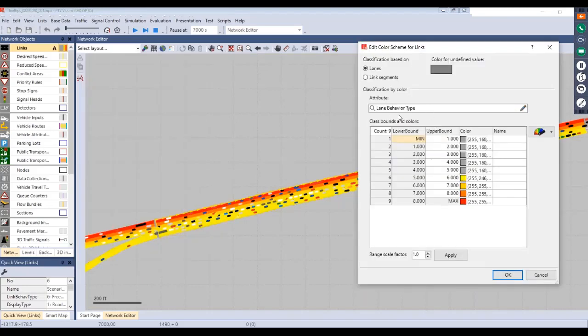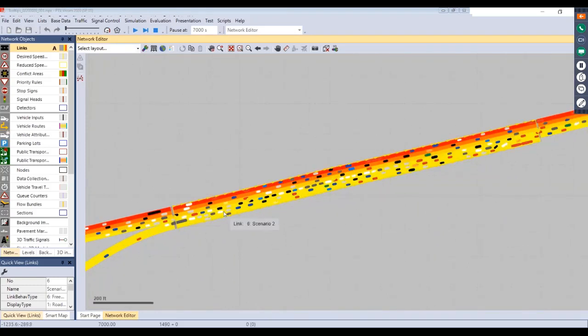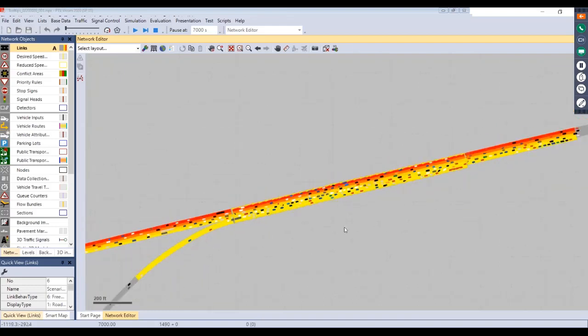For this color scheme right now, we're looking at that lane behavior type. Based on the number of that behavior, we have defined some different colors here. This will just allow you to quickly see how each lane has its own behavior type defined.